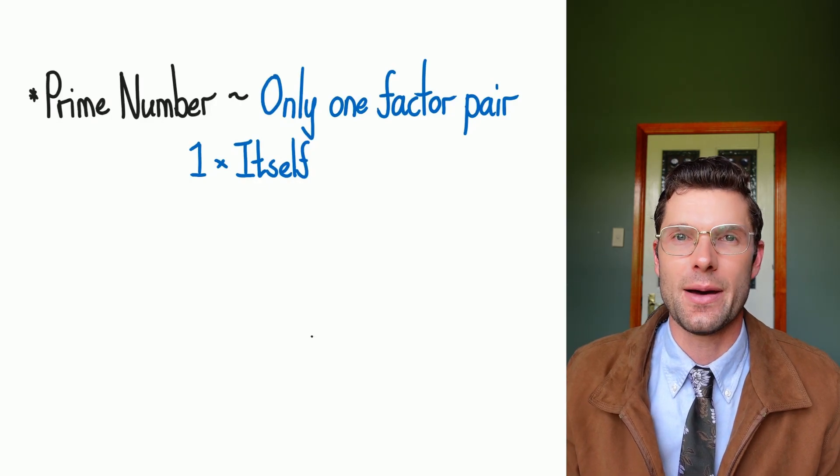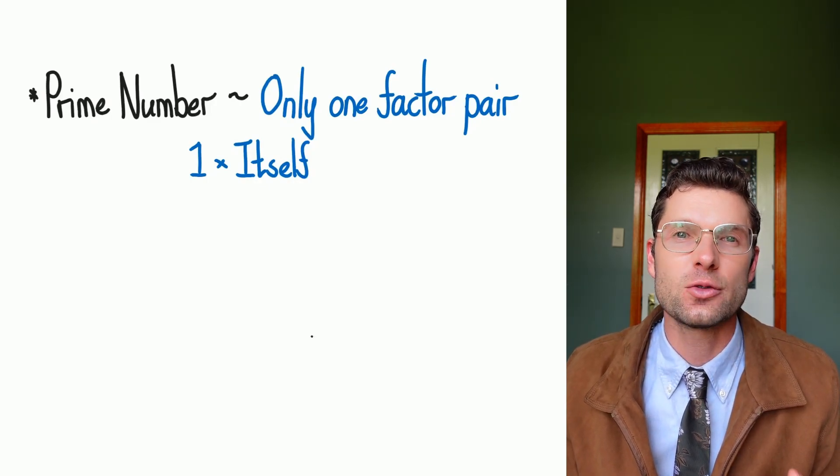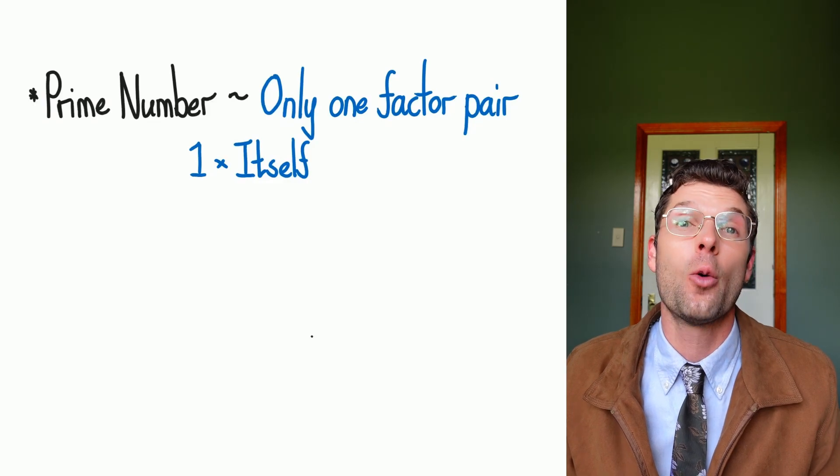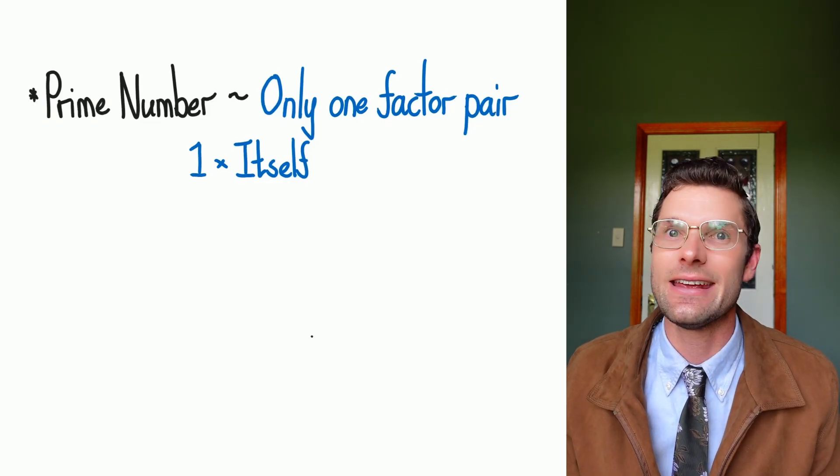We might just need a little reminder of what a prime number is. So a prime number only has one factor pair, one and itself. We can't break the number down in any other way.